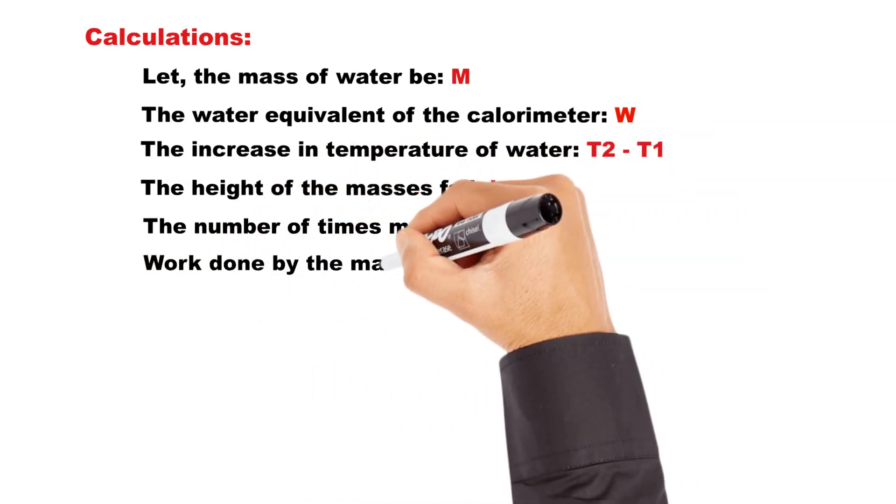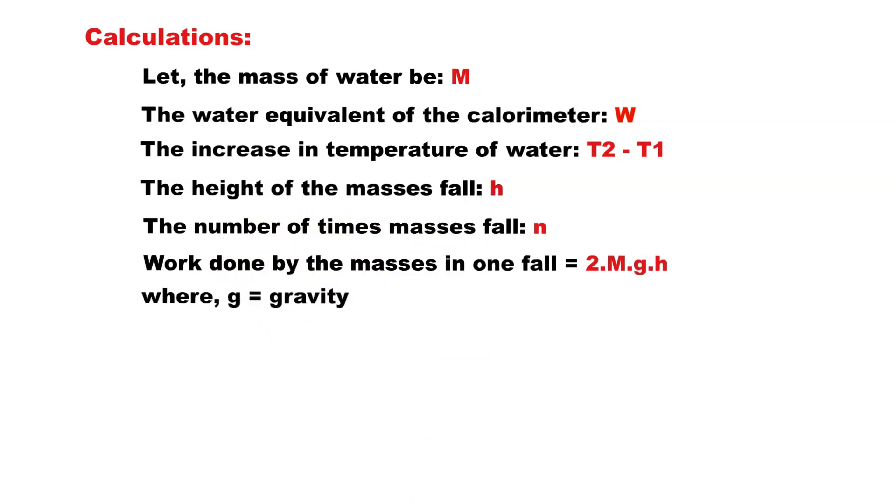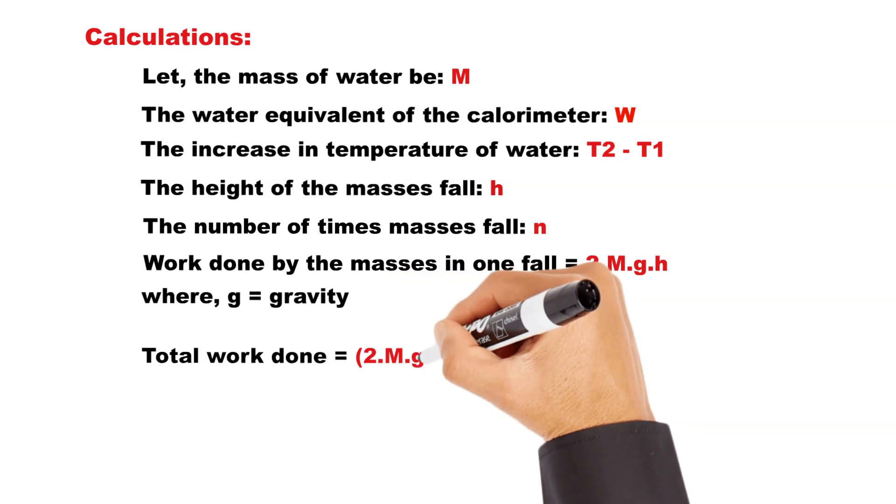From this, the work done by the masses in one fall can be calculated to be 2MGH, where G is gravity. The total work done is 2MGH multiplied by N.